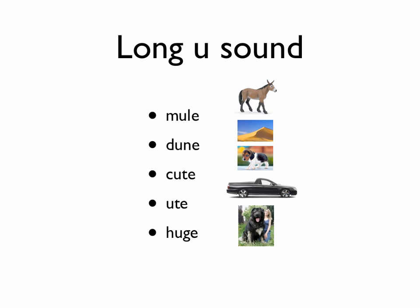The long U vowel sound. 'Mule,' M-U-L — mule. Your turn. 'Dune,' D-U-N — dune. 'Cute,' C-U-T — cute. 'Huge,' H-U-GE — huge. Once again, all of those words end with a silent E, and the vowel says its own name — so U makes the sound of U.